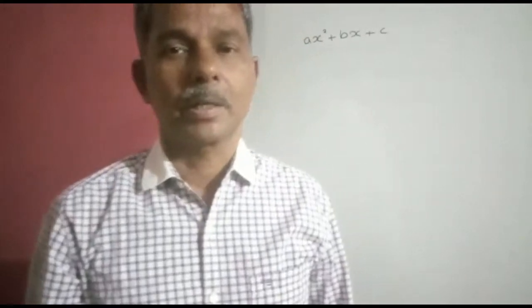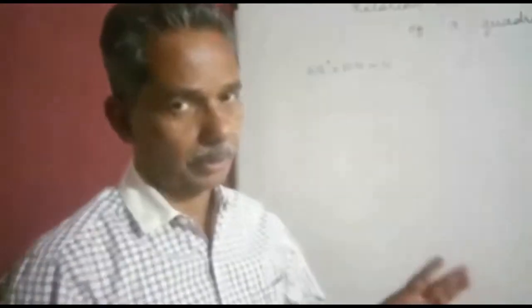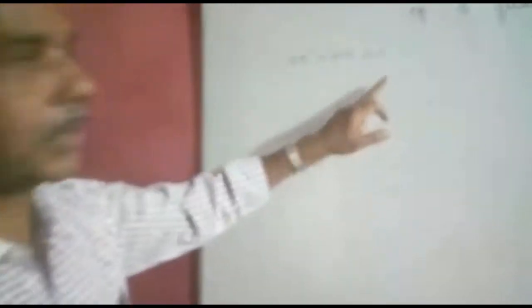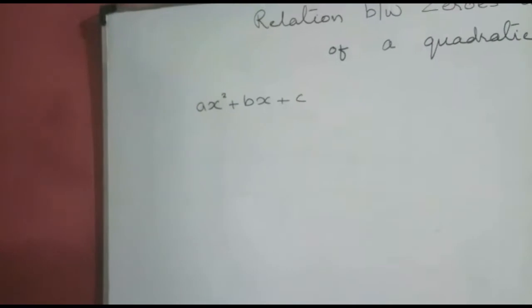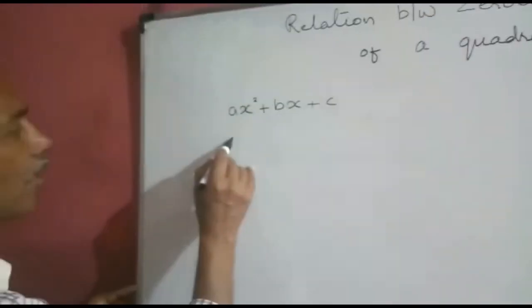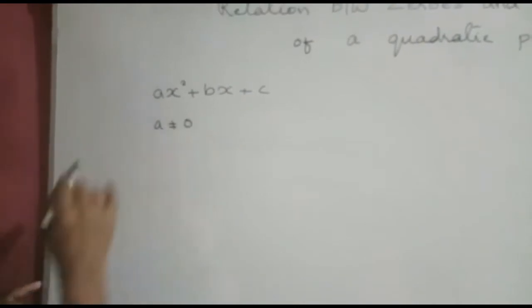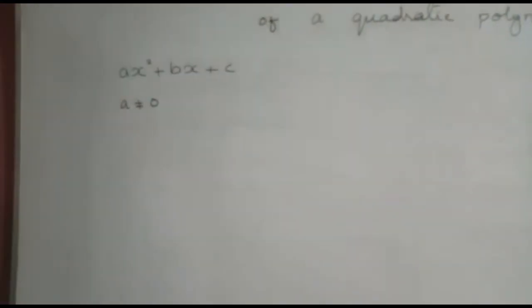Hello students, let us study the relationship between zeros and coefficients of a quadratic polynomial. You know the standard form of a quadratic polynomial is ax squared plus bx plus c, where a, b, c are real numbers and a is not equal to zero. As we have learned earlier, a quadratic polynomial can have at most two zeros.